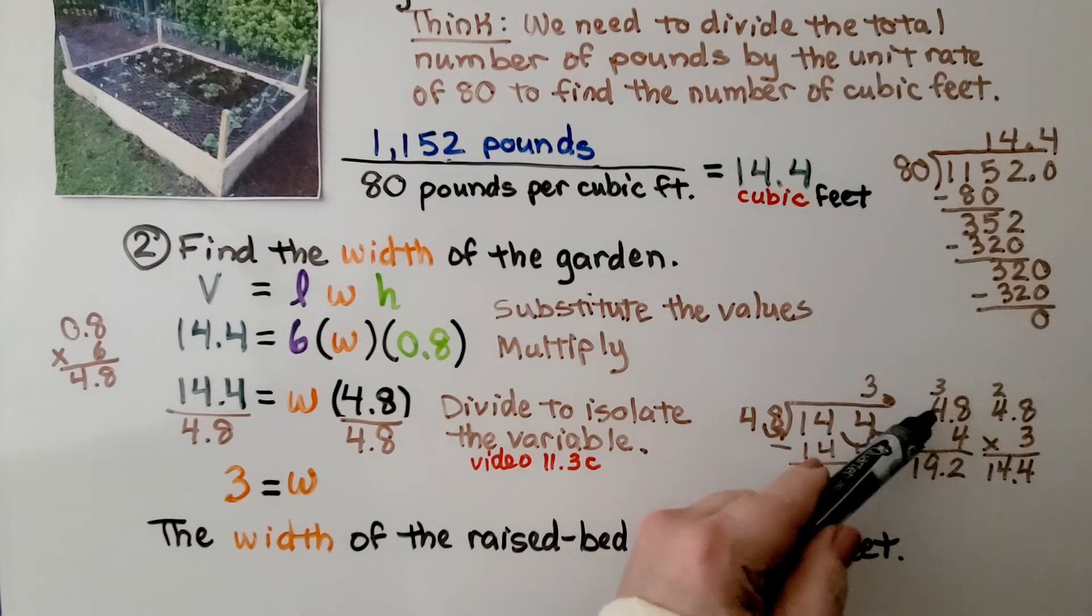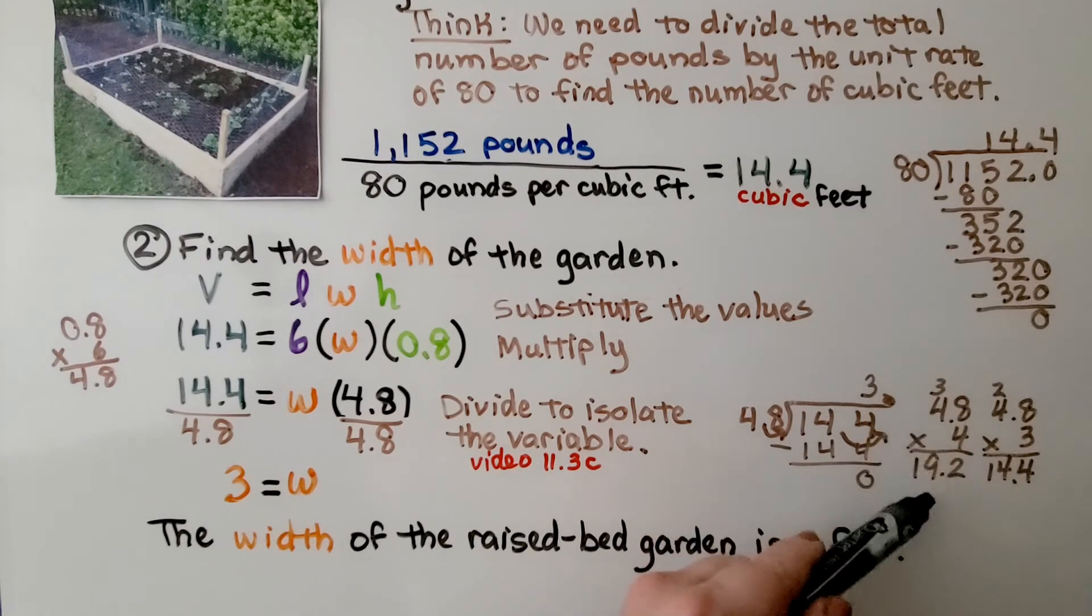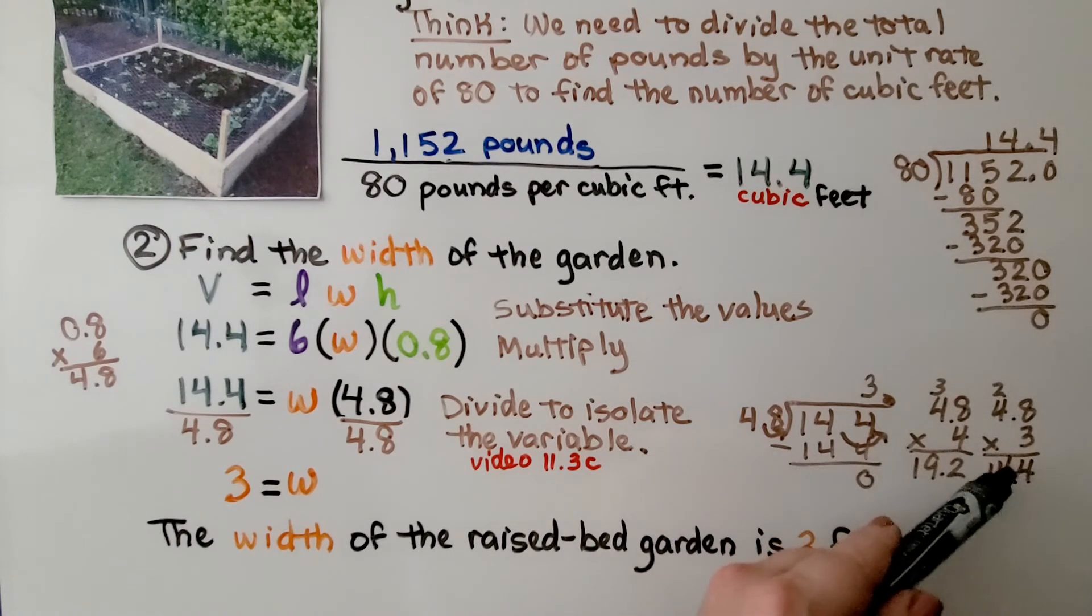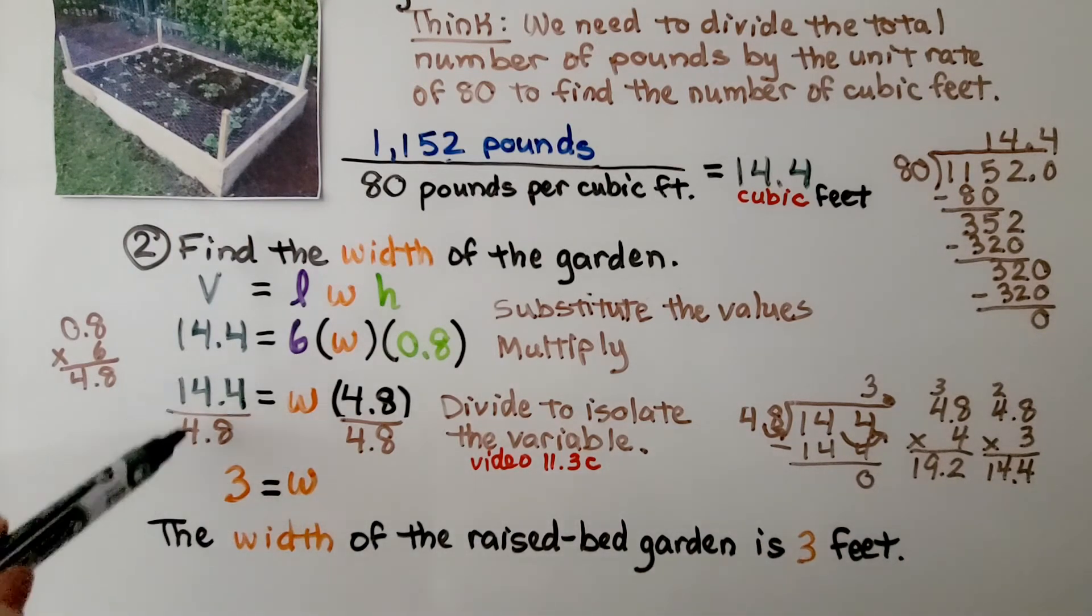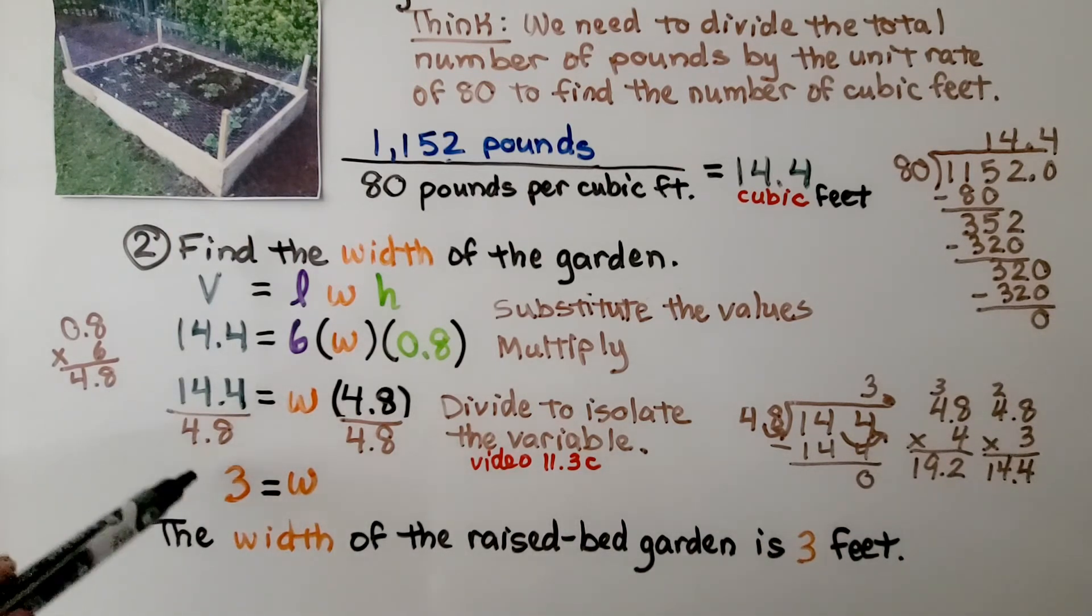We can try multiplying 4.8 times 4 to see if we get 14.4. But that's too much. So we can try multiplying it by 3 and say, oh, that's just right. So we know that's a 3. 14.4 divided by 4.8 is a 3.